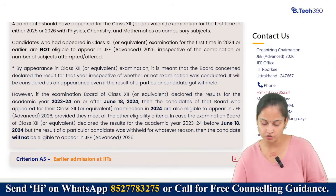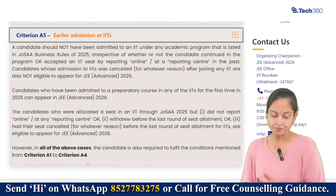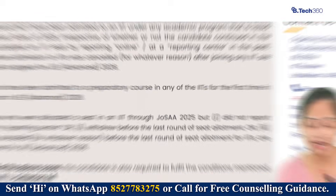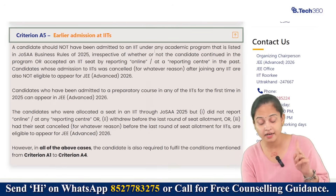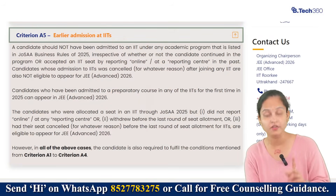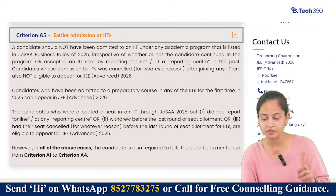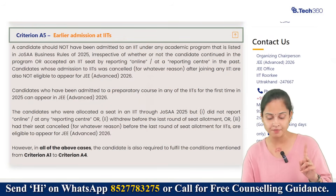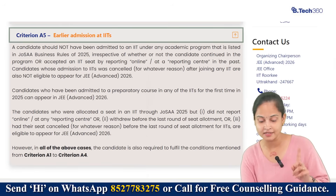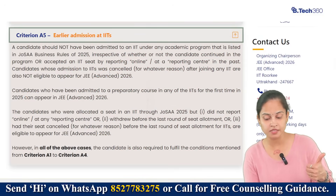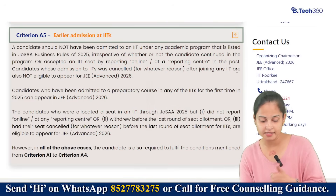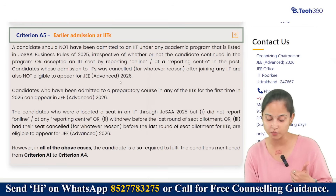Criteria number five is earlier admission at IITs. A candidate should not have been admitted to an IIT under any academic program listed in JoSAA business rules of 2025, irrespective of whether or not the candidate continued in the program or accepted an IIT seat by reporting online or at a reporting center in the past. Candidates whose admission to IITs was cancelled for whatever reason after joining any IIT are also not eligible to appear for JEE Advanced 2026.